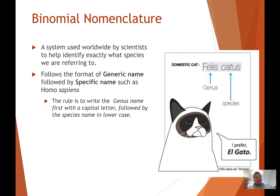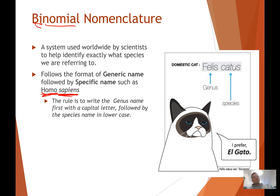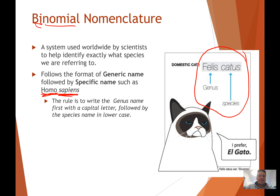And then from this classification system, we get what's called binomial nomenclature. 'Bi' meaning two, 'nomial' coming from two names — so naming things using two names. It's a system used worldwide by scientists, and it follows the format of a generic name followed by the specific, or species, name. A great example of this is Homo sapiens, which are us humans. The rule is to always write the genus name first with a capital letter — so 'Homo' here is the genus name — and the species name, 'sapiens', is always written in lowercase. Another example is Felis catus, which is the domestic cat.